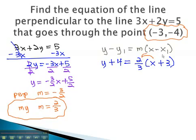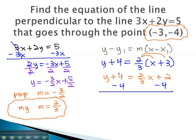To get intercept form, we distribute through the parentheses, and y plus 4 equals 2 thirds x plus 2. Subtracting 4 from both sides to get the y alone, and in intercept form, the perpendicular line is 2 thirds x minus 2.